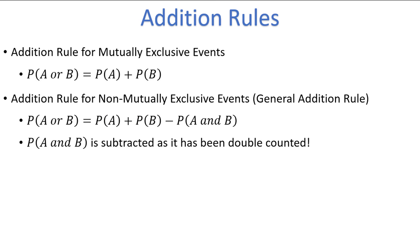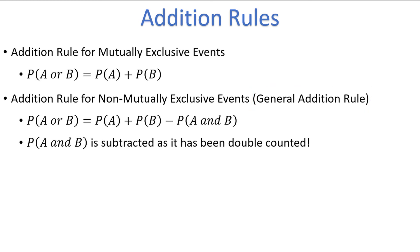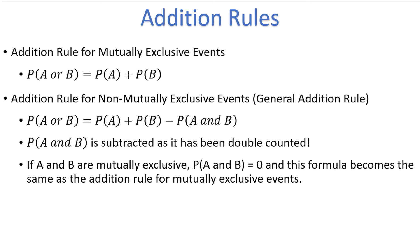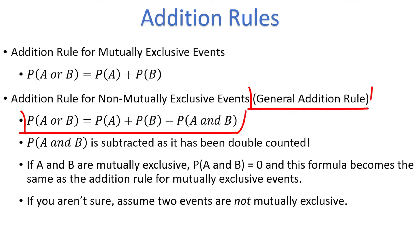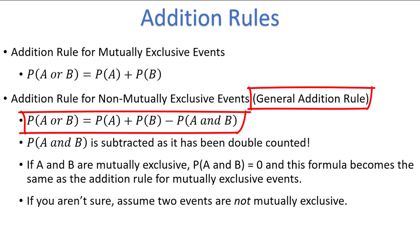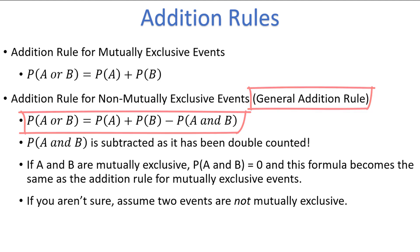The second rule is often called the general addition rule because it works for any two events, regardless of if they are mutually exclusive or not. Notice that the second formula becomes the first formula if A and B are mutually exclusive events, since the A and B term equals zero for mutually exclusive events. You should default to using the general rule if you aren't sure if two events are mutually exclusive, but if you know that the two events are mutually exclusive, you can use the first formula. Let's look at some examples.